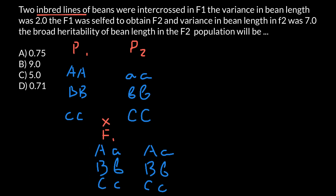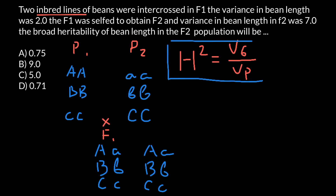The next step is to memorize this formula: H-squared, which stands for broad-sense heritability, equals variance genetic divided by variance phenotypic. This is all you need to know in order to solve this problem.